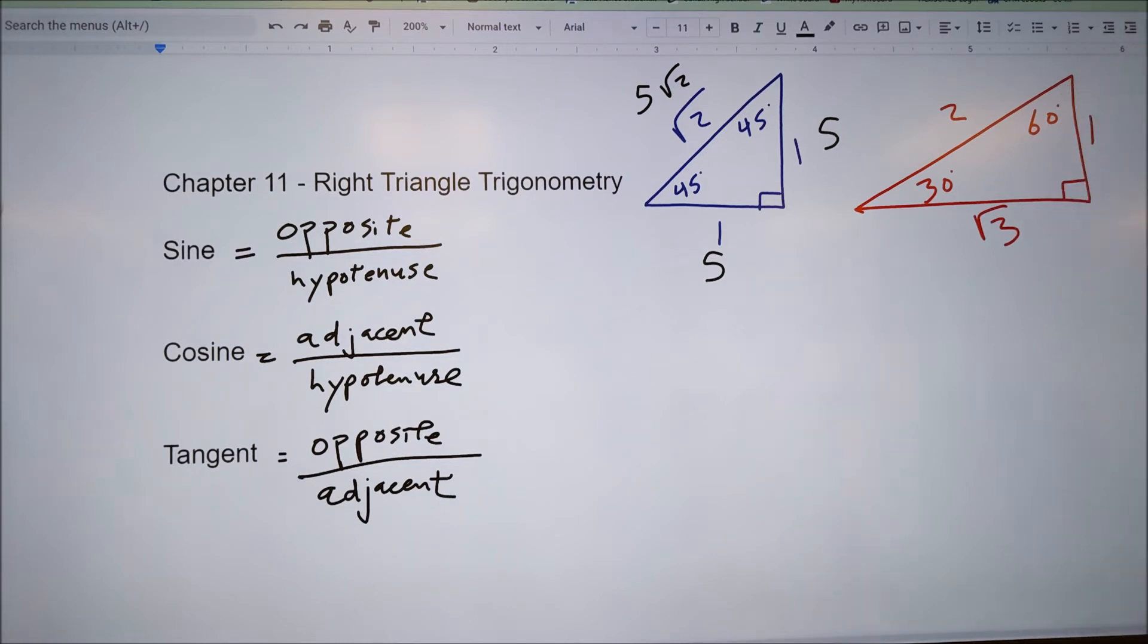The second right triangle you need to know is a 30, 60, 90, where one angle is 30. The side opposite that angle is one. The side opposite 60 is root three. I could use the Pythagorean theorem to get square root of four or two. This could be 19. If this is 19, this is twice that amount, 38, and this would be 19 root three.